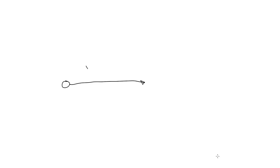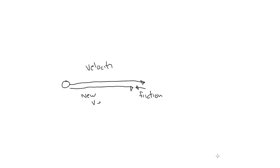So if this object is moving with a velocity like this, the friction vector will be a vector like this. If you add those vectors, you'll get a new velocity vector with the same direction but a somewhat smaller magnitude. In other words, friction slowed the object down. If the object were moving in this direction, the friction would be a vector like this.